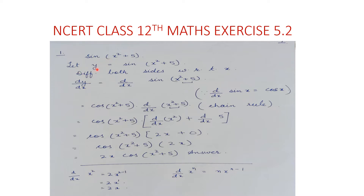First step: let y = sin(x² + 5). Now differentiating both sides with respect to x, this gives dy/dx = d/dx of sin(x² + 5). Since d/dx(sin x) = cos x, we get cos(x² + 5) multiplied by d/dx(x² + 5). This is what we are doing — applying the chain rule.